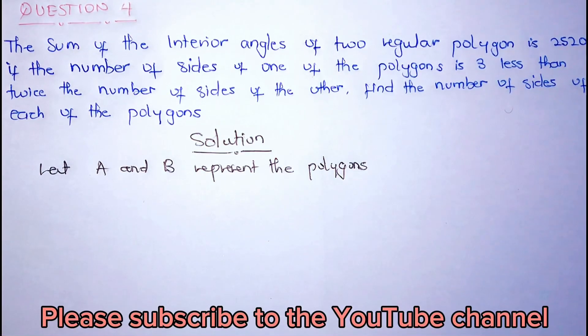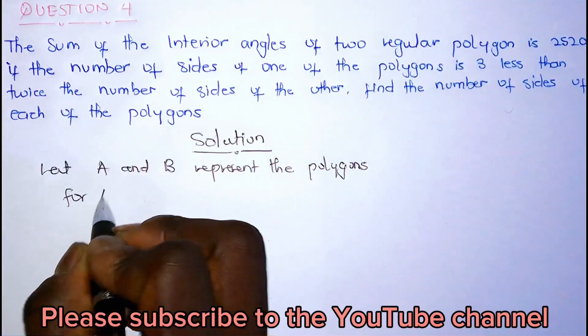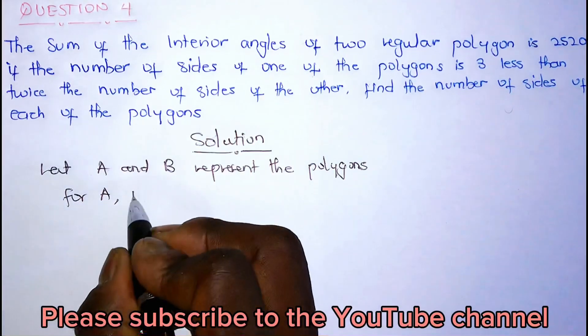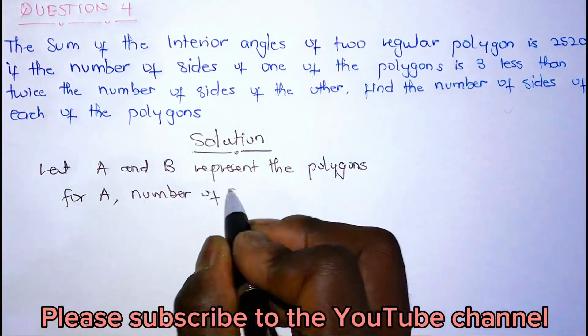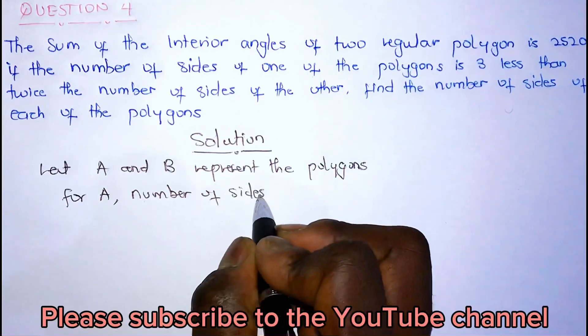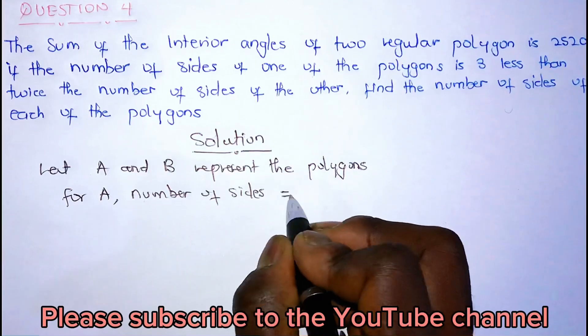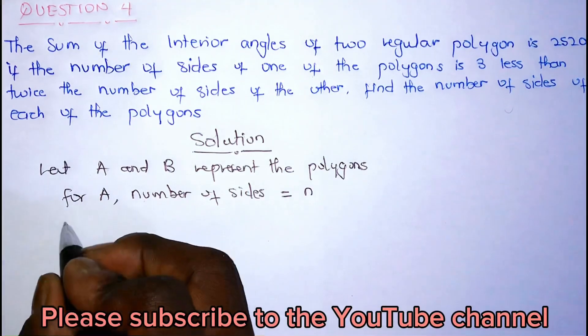We have two of them. We don't know the size of any. So for A, for the first polygon, you can see number of sides should be equal to N. For B...